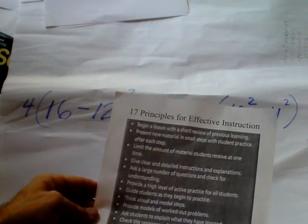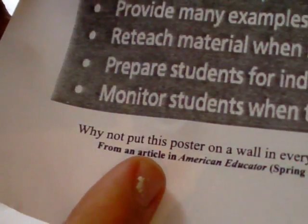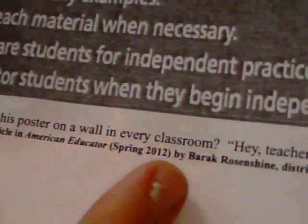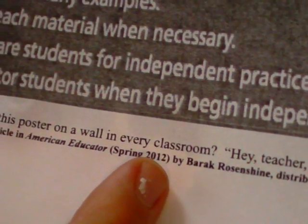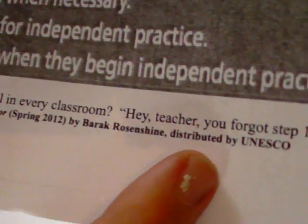This is another attempt to use Barack Rosenshine's list. See how it says Barack Rosenshine? It was mentioned in an article in American Educator, Spring 2012. If you look up Rosenshine, you can also find it under UNESCO. So what we're doing is we're giving a large number of questions and we're limiting the amount of material a student receives at one time. That's why this video will be less than five minutes.